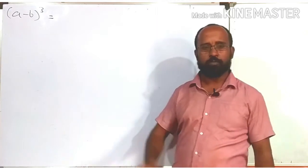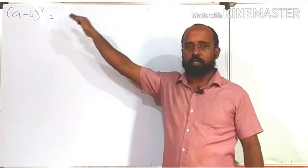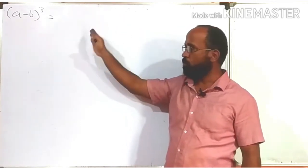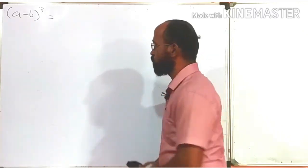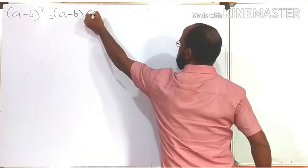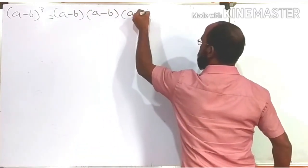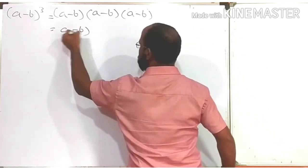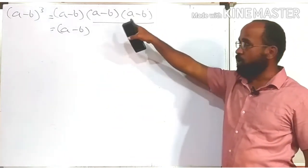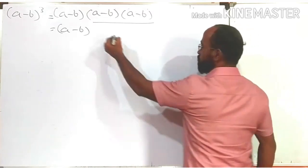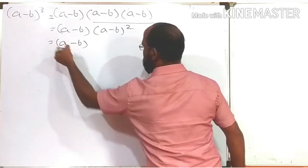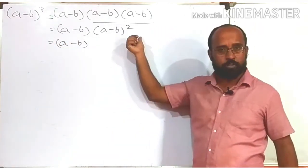To find the cube of a number, we multiply the same number by itself three times. Similarly, to find the cube of a binomial or any expression, we multiply the same expression by itself three times. So (a - b)³ equals (a - b) multiplied by (a - b) multiplied by (a - b), which we can write as (a - b) times (a - b)², since we are multiplying the same term by itself two times.